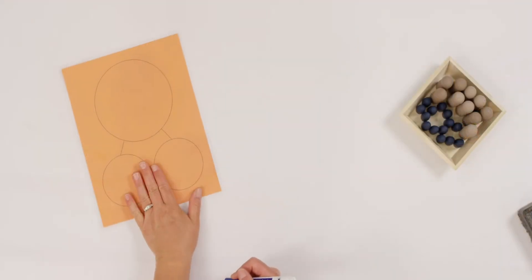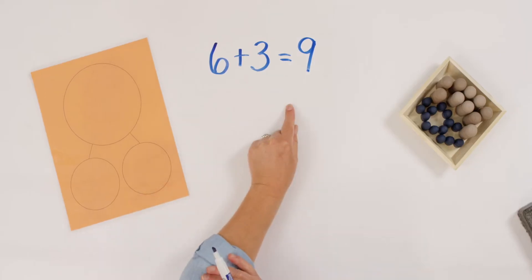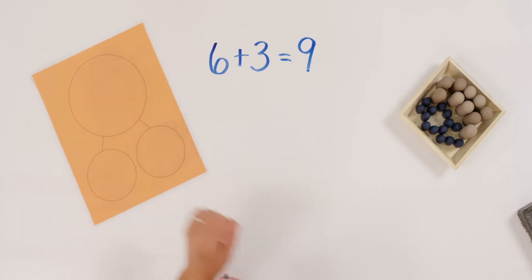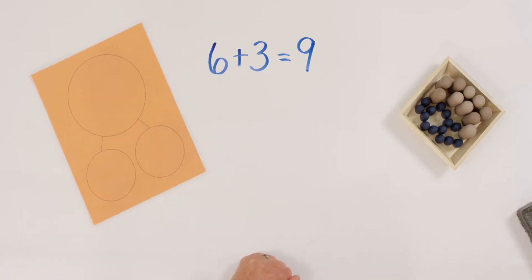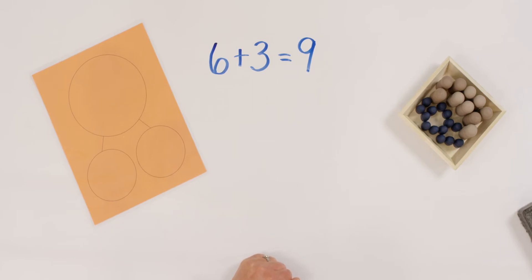So for this part I have my number bond template ready. Do you have yours? Okay. We're going to use this to help us with our next activity. So watch what I do. I'm going to write an addition sentence. Let's start up here. Six and three more equals nine. Can you take what I just wrote and put it in a number bond template? Do you remember the parts of our number bond template?